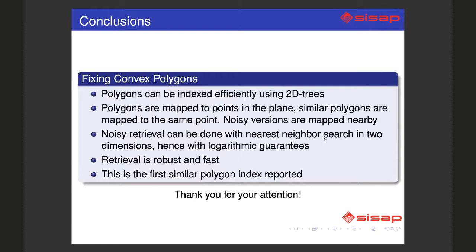This is a quick recap of what we see now. It says that polygons can be indexed efficiently using 2D trees - that is, we will have logarithmic guarantees. To do this, the polygons are mapped to points in the plane, and similar polygons are mapped to the same point. Noisy versions of the polygons are mapped nearby, so we can retrieve them using the nearest neighbor.